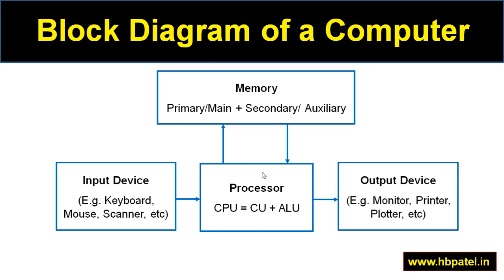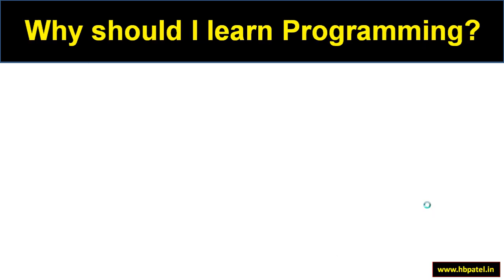Once the data is processed and your final result is ready, it is sent to an output device. Output devices could be a monitor, a printer, or others. This is the simple block diagram of a computer.